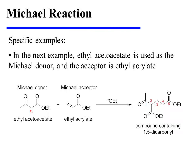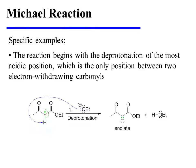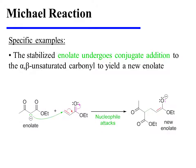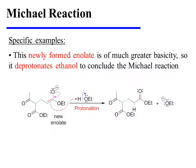In this next example, ethyl acetoacetate is used as the Michael donor, and the Michael acceptor is ethyl acrylate. The reaction begins with the deprotonation of the most acidic position, which is the only position between two electron-withdrawing carbonyls. A stabilized enolate results. The stabilized enolate undergoes conjugate addition to the alpha-beta unsaturated carbonyl to afford a new enolate, and this newly formed enolate is of much greater basicity, so it deprotonates ethanol to conclude the Michael reaction.